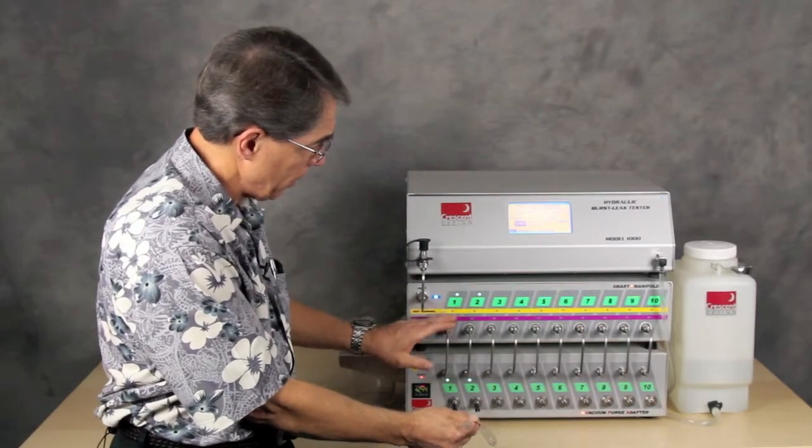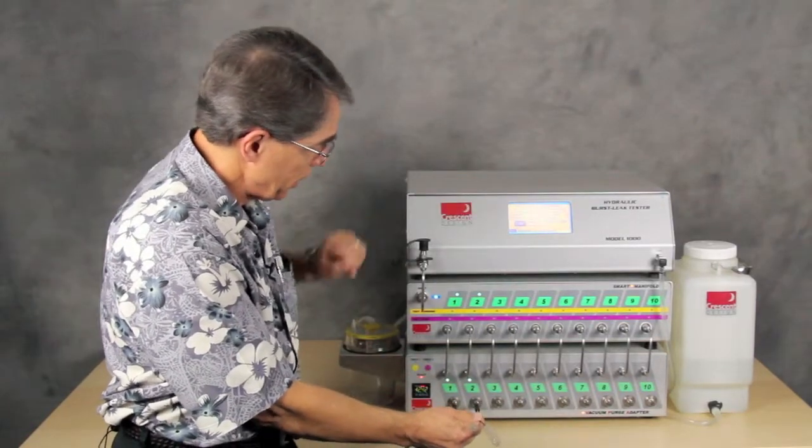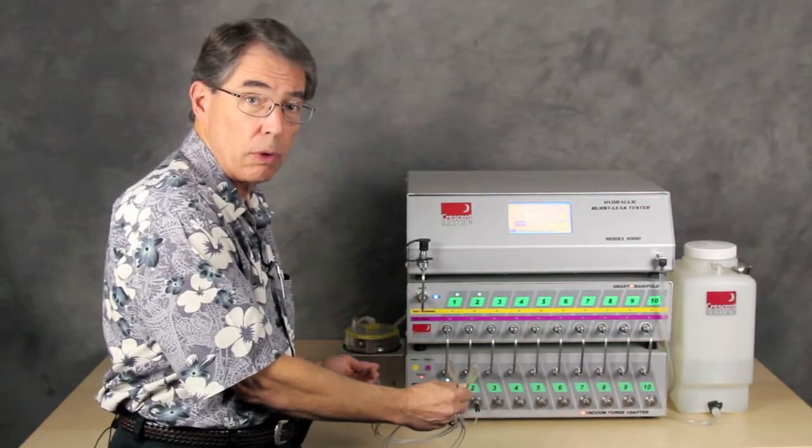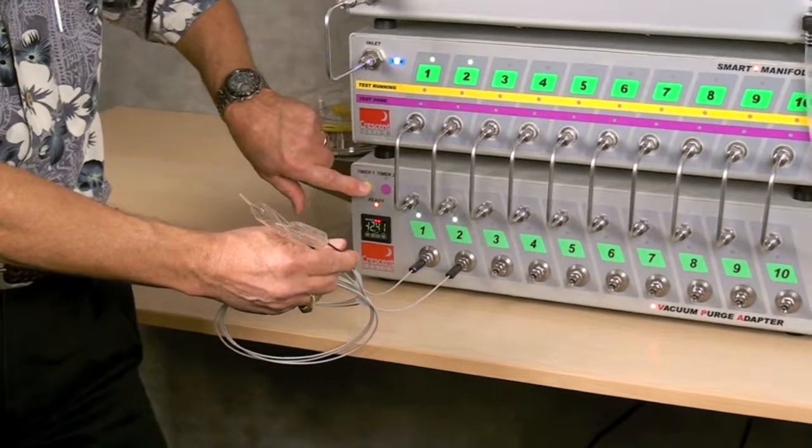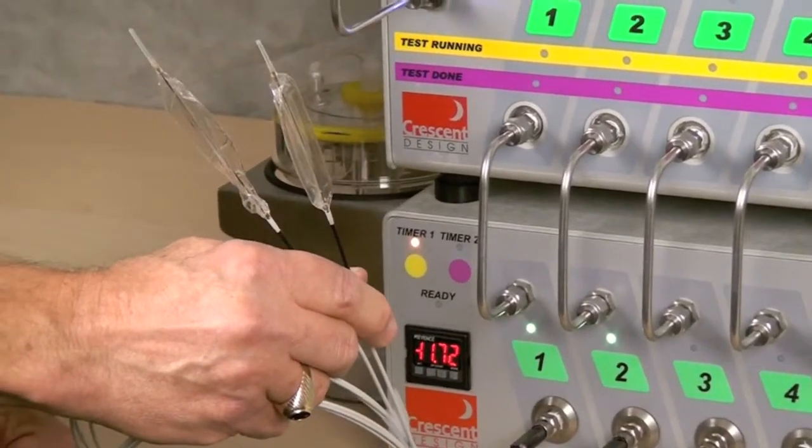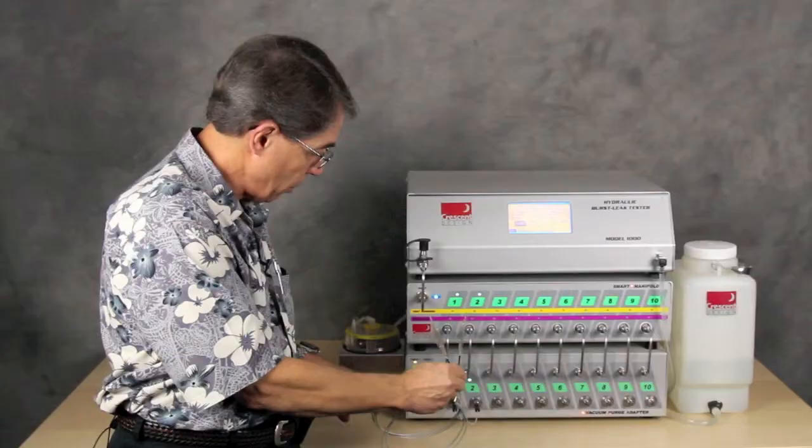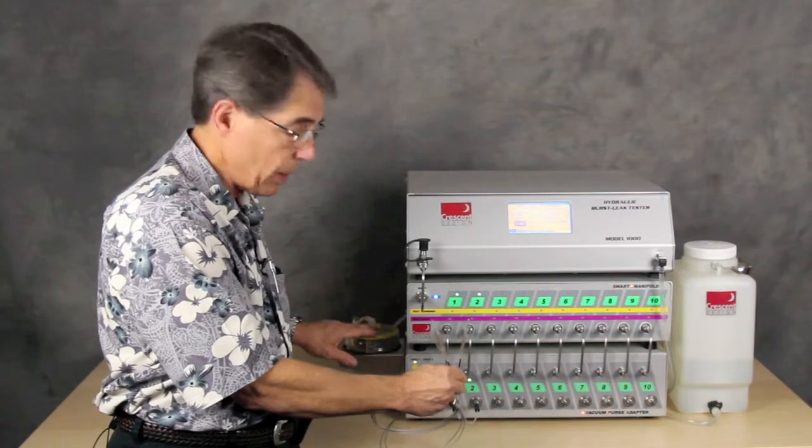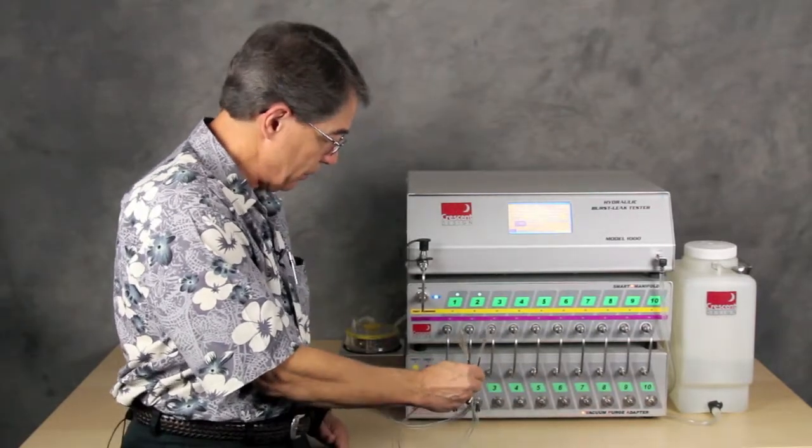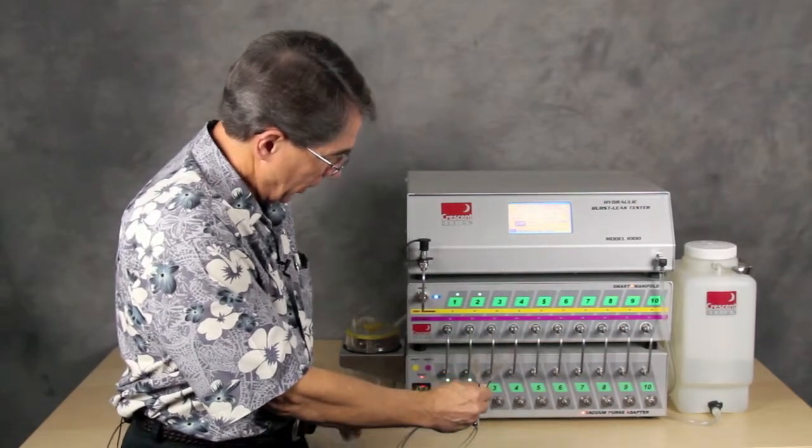So I have everything set up with our smart manifold. I've selected ports one and two on the VPA. And I have a test set up here. So prior to the test, we need to prepare the catheters. That is to say remove all of the air. So I will hit timer one. And you can see that right away the catheters, the balloons are evacuated. And the pump is cycled on as it draws the air out into the vacuum container mounted on the side of the VPA. And we'll go ahead and let the vacuum pump cycle off so it's not quite as distracting. And it's done.